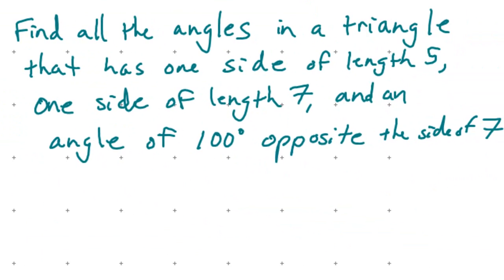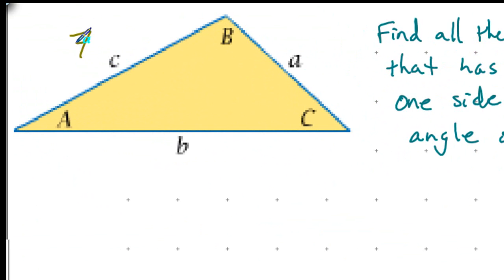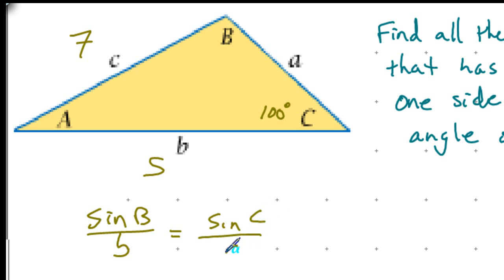In this example, Professor Axler asks us to find all angles in a triangle with side lengths of 5 and 7 and an angle of 100 degrees opposite the side of 7. Labeling the triangle: side c equals 7, side b equals 5, and big C equals 100 degrees. Using the Law of Sines: sine of B over 5 equals sine of 100 degrees over 7.